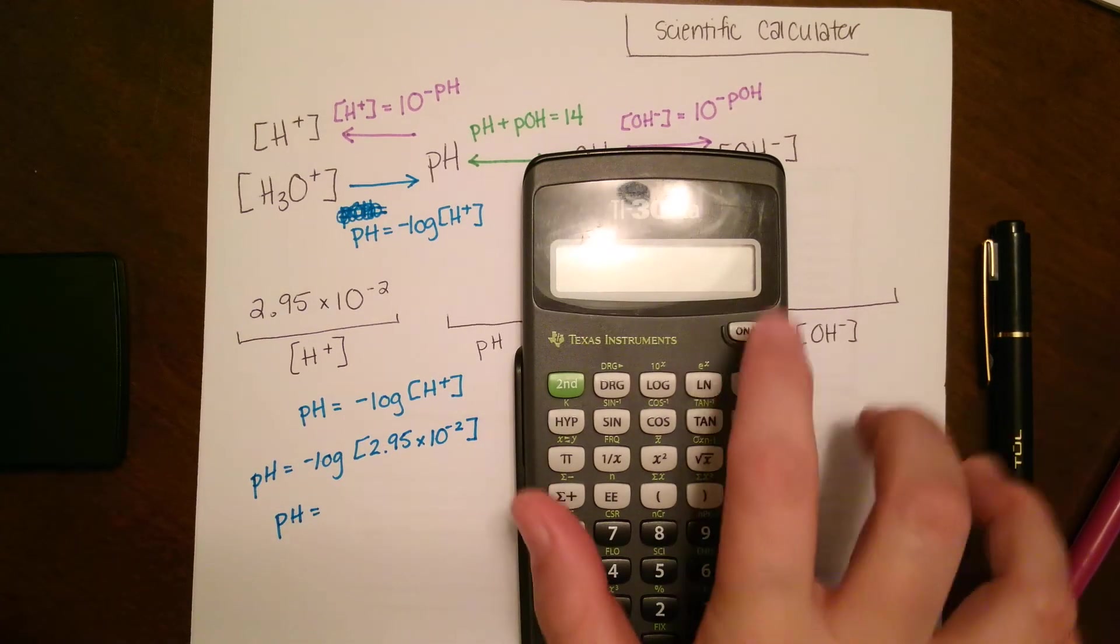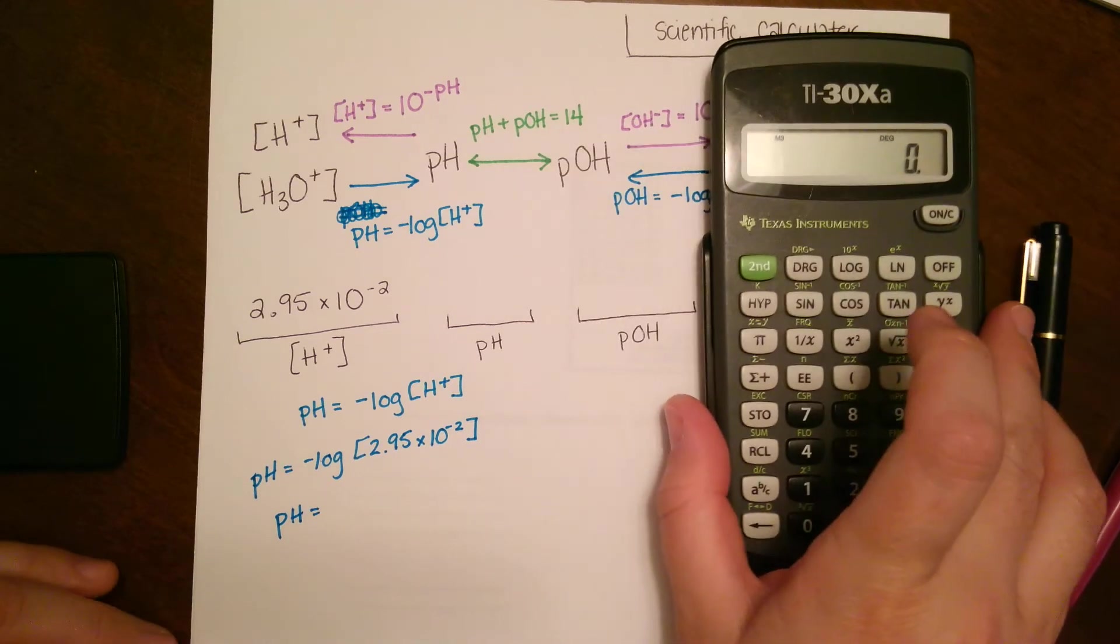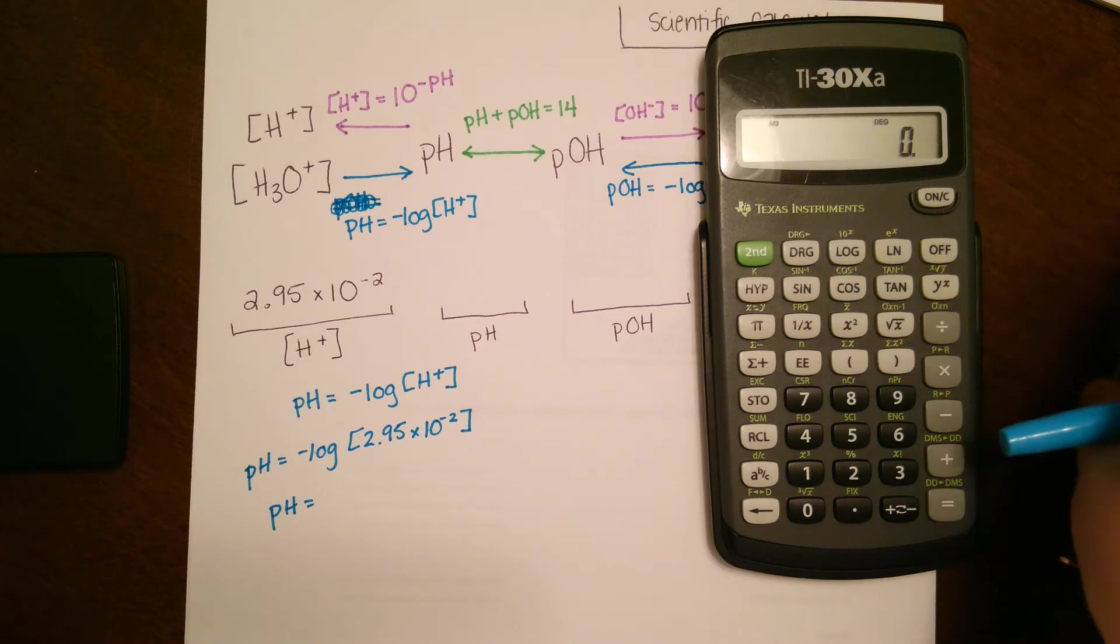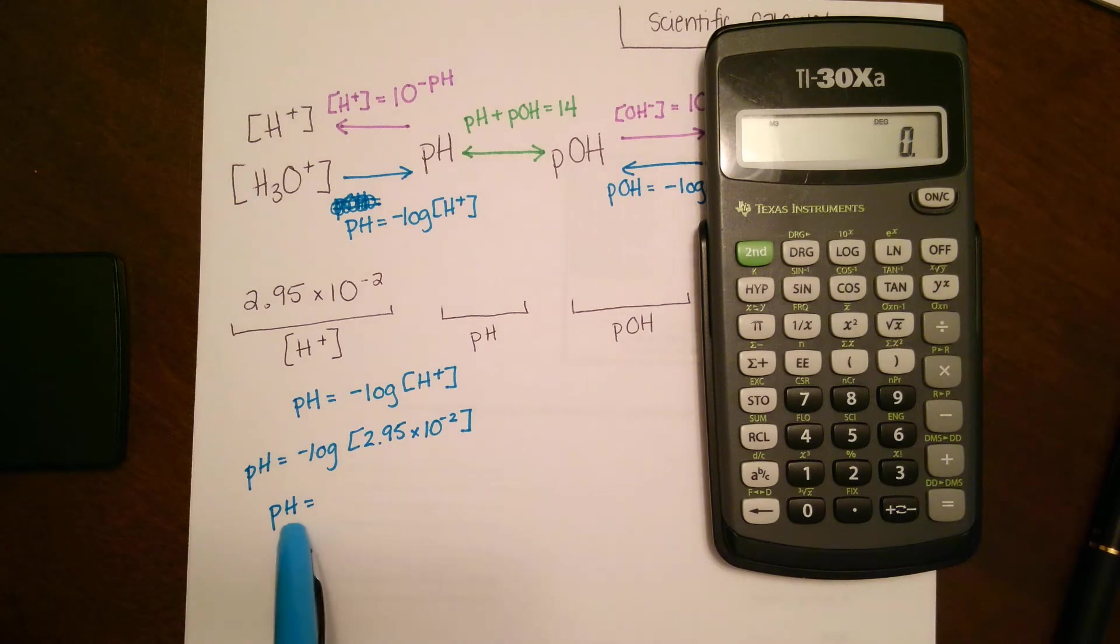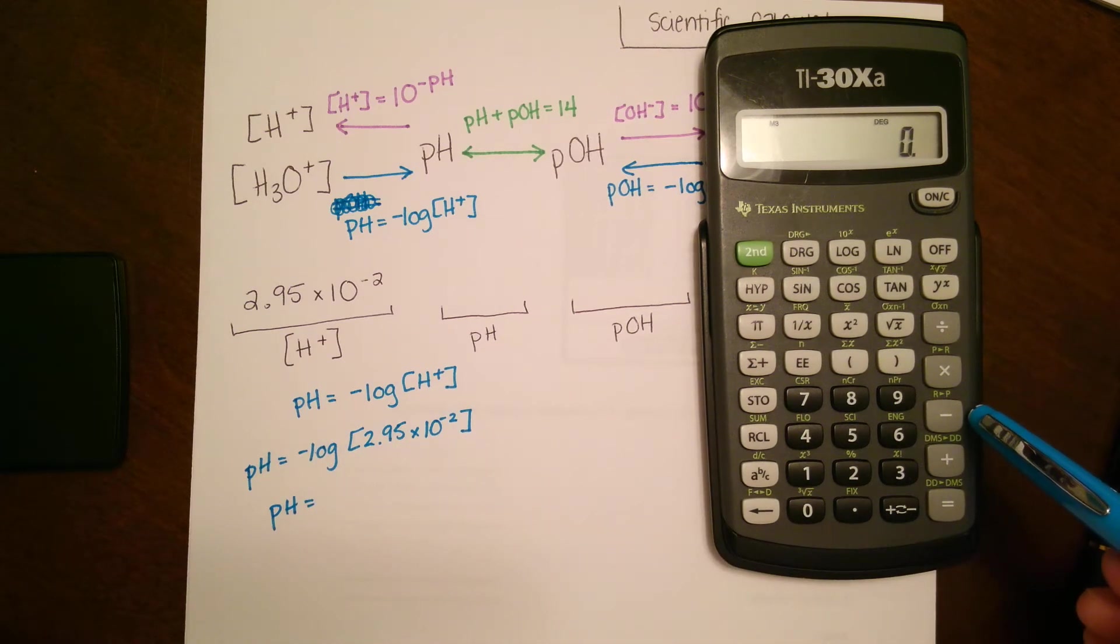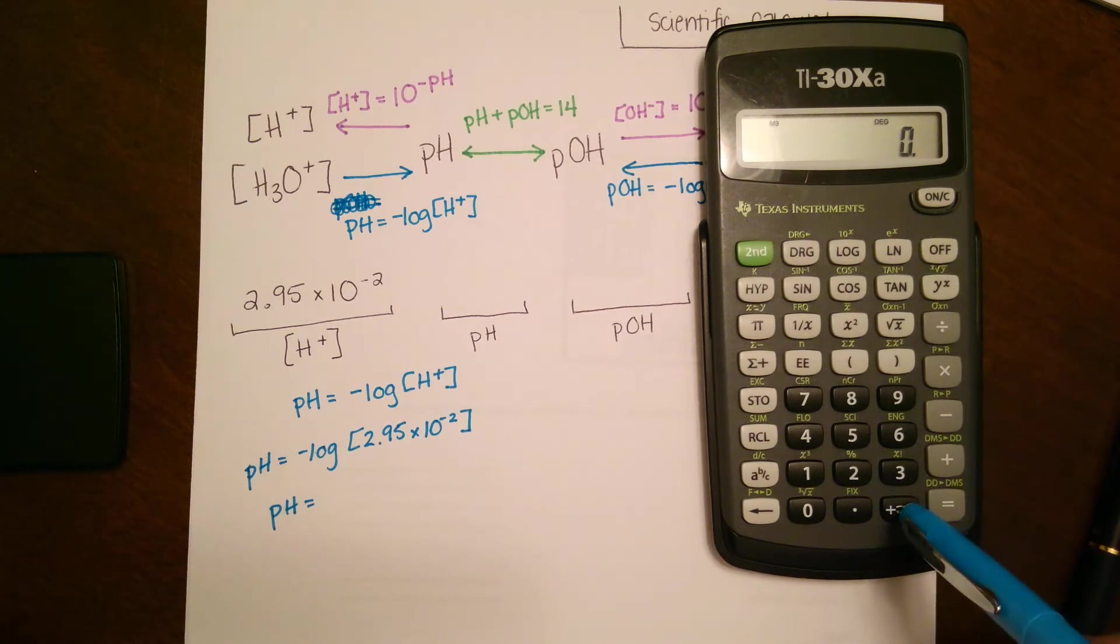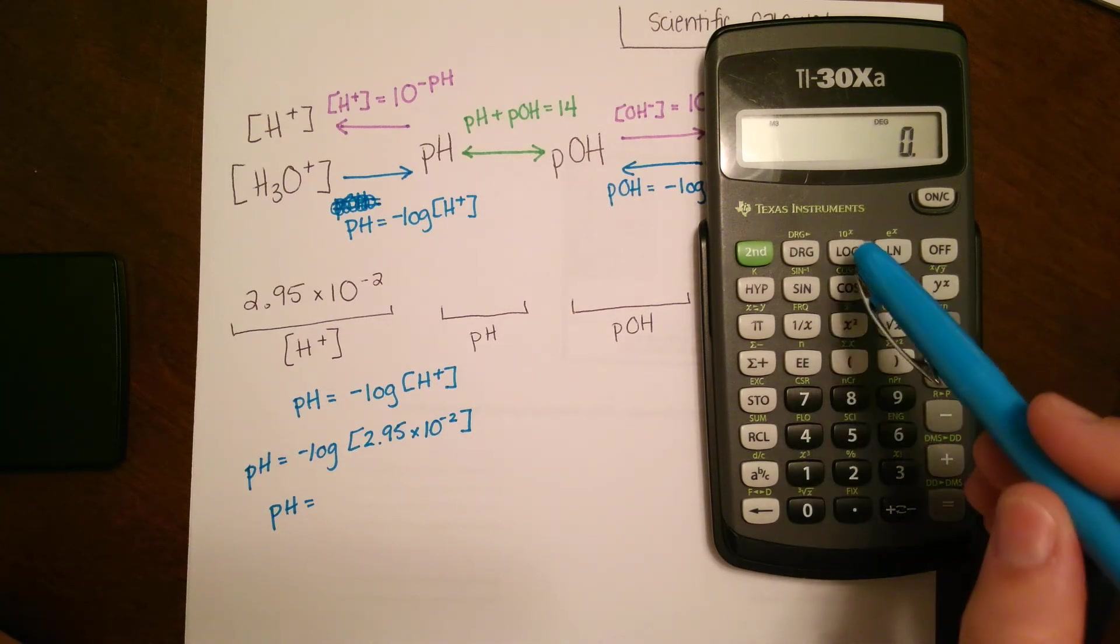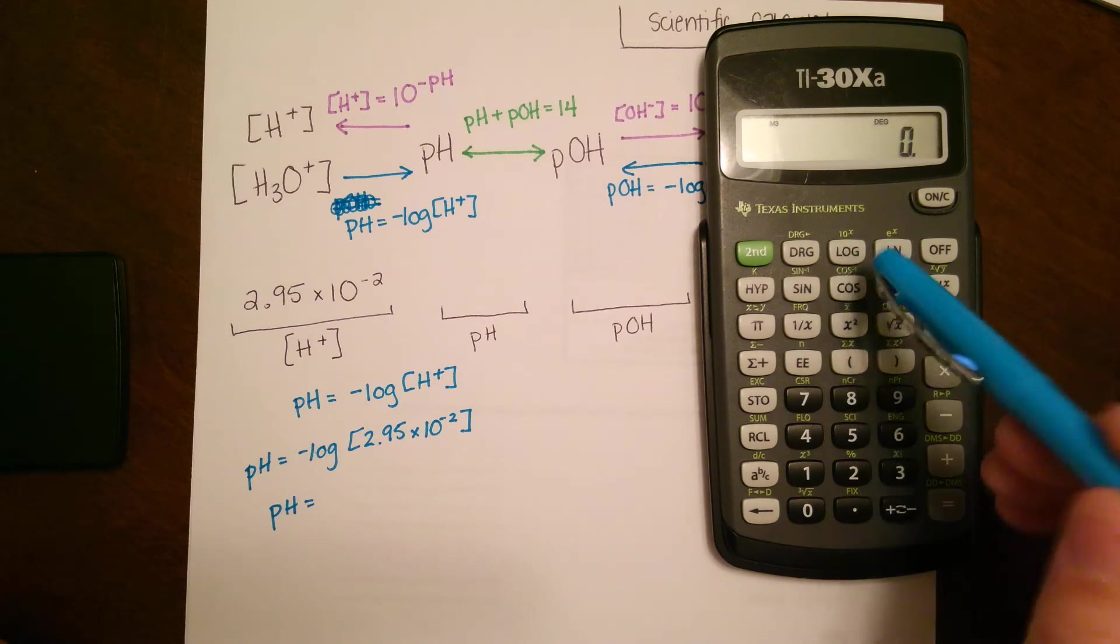If you have this calculator, it should look something like this. The only thing that's tricky about this calculator is that you can't always see what you've already punched in. The number one mistake I see is that a lot of students, when they plug in that negative, want to put the subtraction symbol. That is not correct. Make sure you're using that negative function. We're going to say negative log.